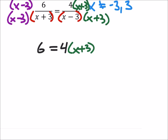I've got this is 4 times the x plus 3. And I've got 6 times the x minus 3. So see how we got rid of the denominators there? Because they were the same.